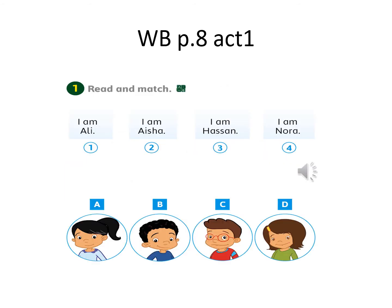Open your workbook, page 8, Activity 1: Read and match. Number 1 — I am Ali. Where is Ali? Perfect, it's picture B. Now pause the video, do the activity, then come back to check your answers.